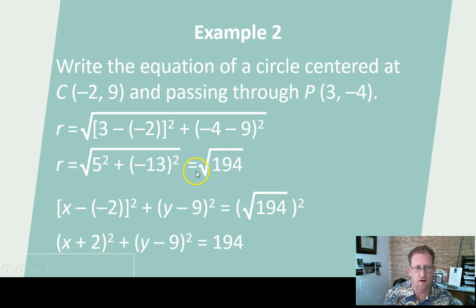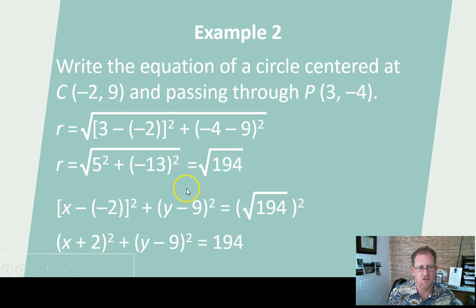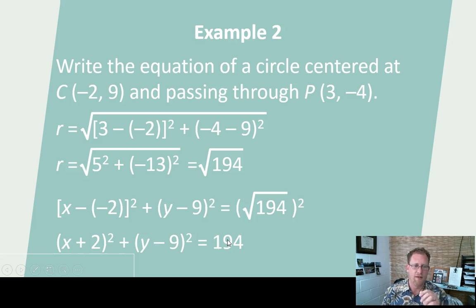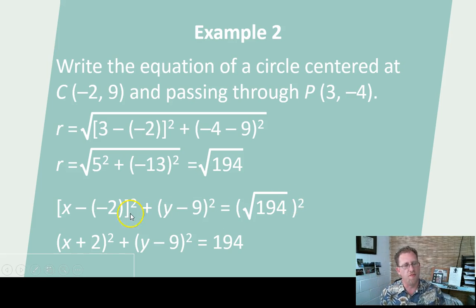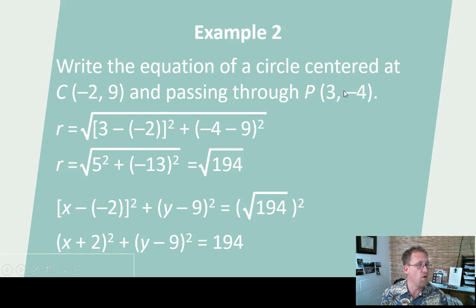Now I take r — that's radical 194 — and plug it into the standard form, using x and y because I'm talking about all the points for which this works. With h and k as my centers, I simplify the signs: x minus negative 2 becomes x plus 2. So: (x plus 2) squared plus (y minus 9) squared equals 194. Why 194 and not radical 194? Because the equation uses r squared — when you square a radical, the radical goes away. This is the final equation for a circle centered at negative 2, 9 passing through (3, negative 4).